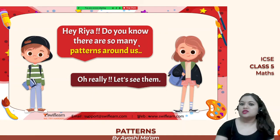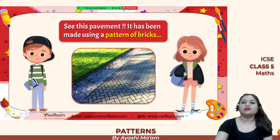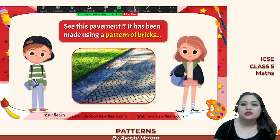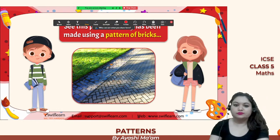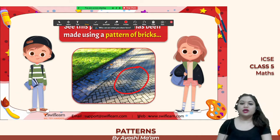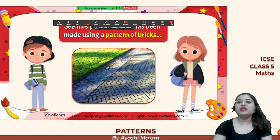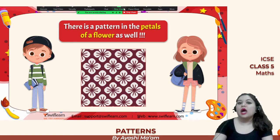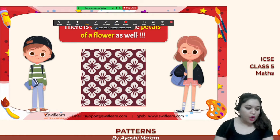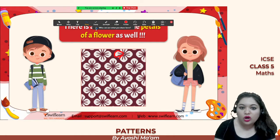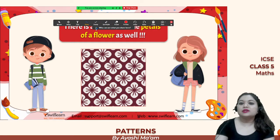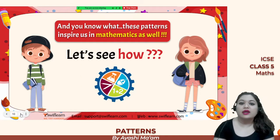There are so many patterns around us. Look at this pavement — it has been made using a pattern of bricks. You can see all the bricks are arranged in a pattern. If you notice a flower properly, you will also see a pattern in its petals. So we see patterns every day, everywhere around us.